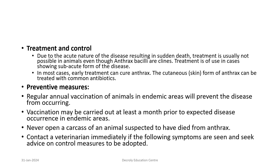Due to the acute nature of the disease resulting in sudden death, treatment is usually not possible in animals, even though anthrax bacilli are sensitive to antibiotics. Treatment is of use in cases showing sub-acute form of the disease. Early treatment can cure anthrax, and the cutaneous (skin) form can be treated with common antibiotics. Regular annual vaccination of animals in endemic areas will prevent the disease. Vaccination may be carried out at least a month prior to expected disease occurrence. Never open a carcass of an animal suspected to have died from anthrax; contact a veterinarian immediately if symptoms are seen.